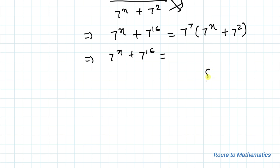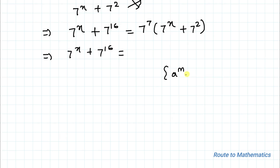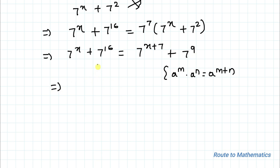Here we apply the algebraic identity: a to the power m multiplied by a to the power n equals a to the power m plus n. When we multiply the same bases, the powers get added. So we can write 7 to the power (x plus 7) on the left, and 7 to the power (7 plus 2), which is 7 to the power 9, on the right.